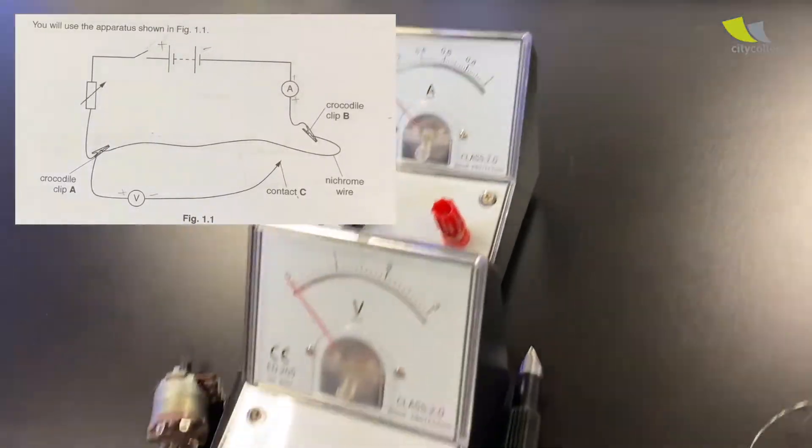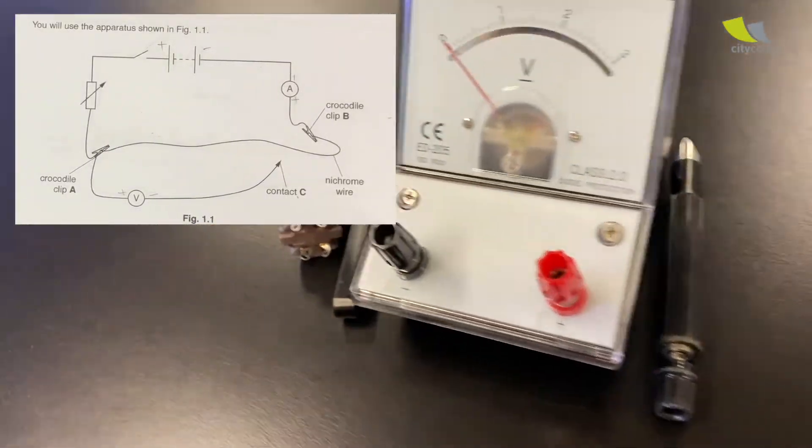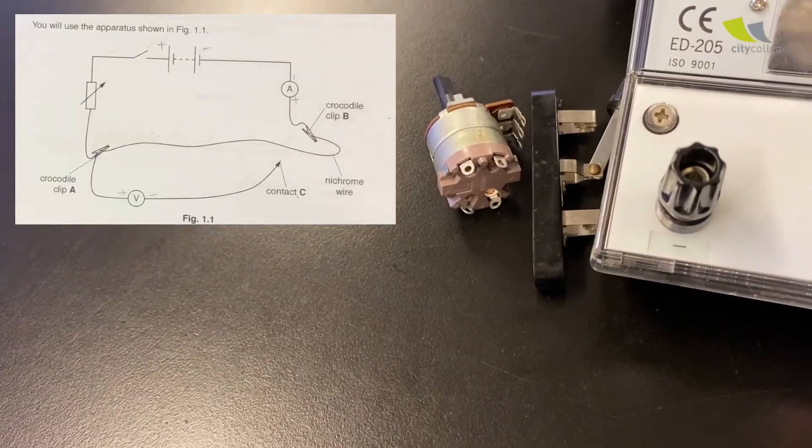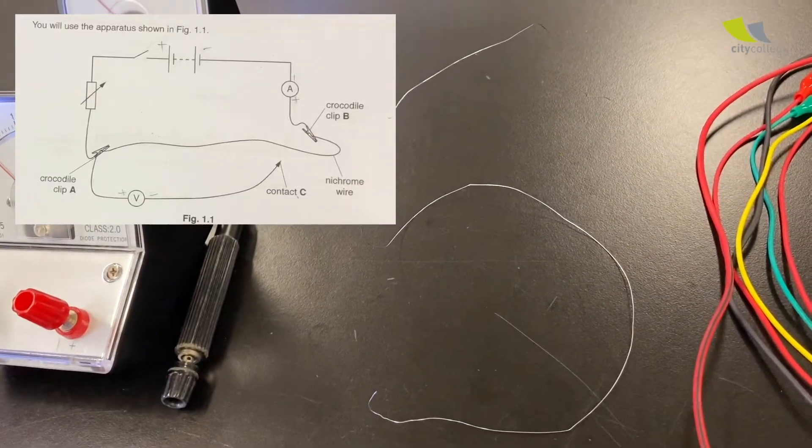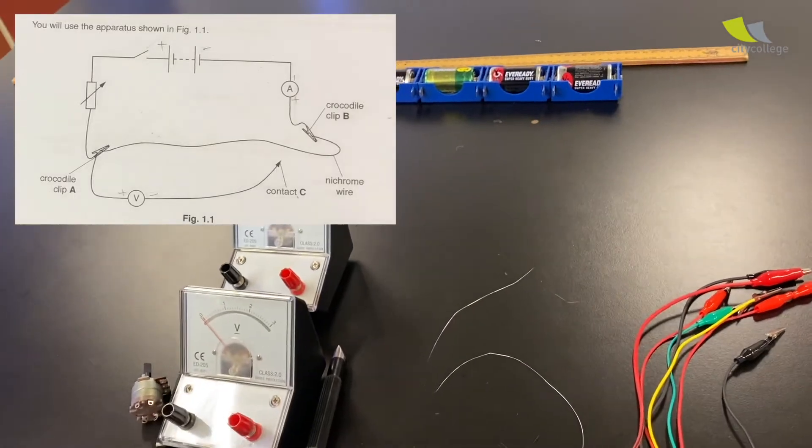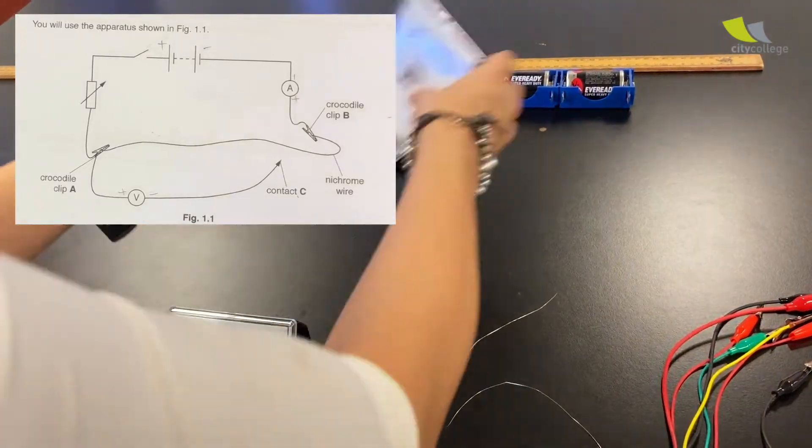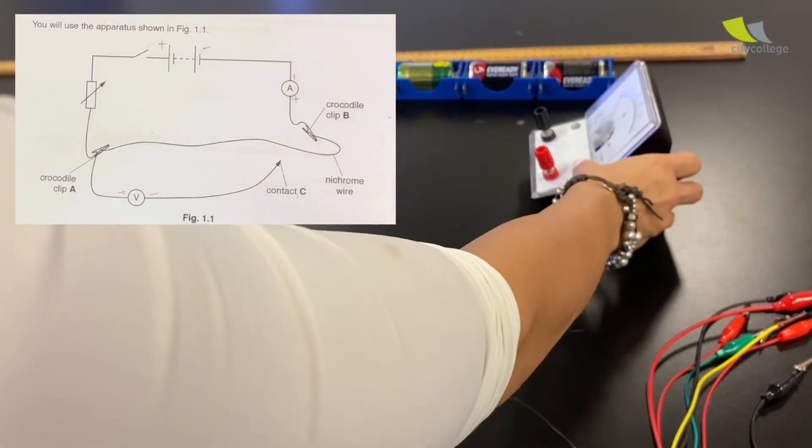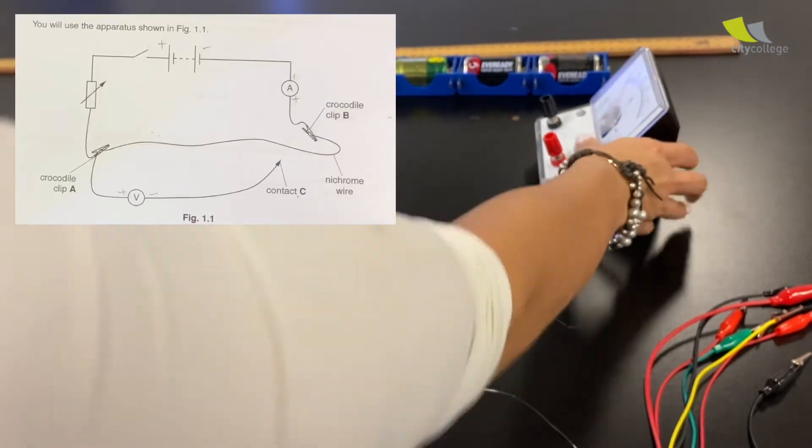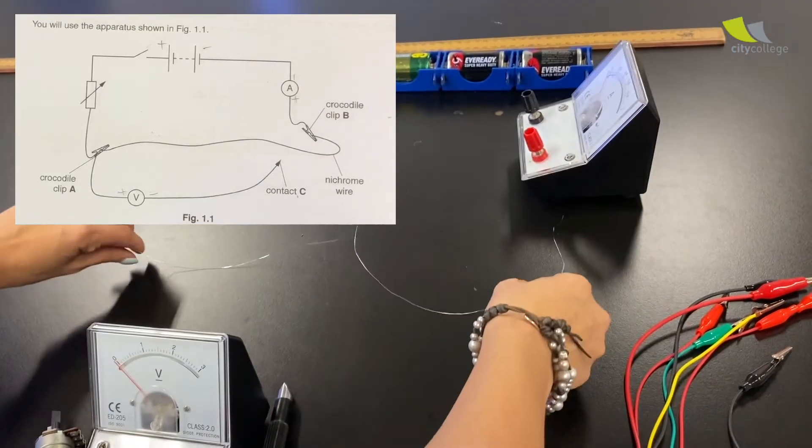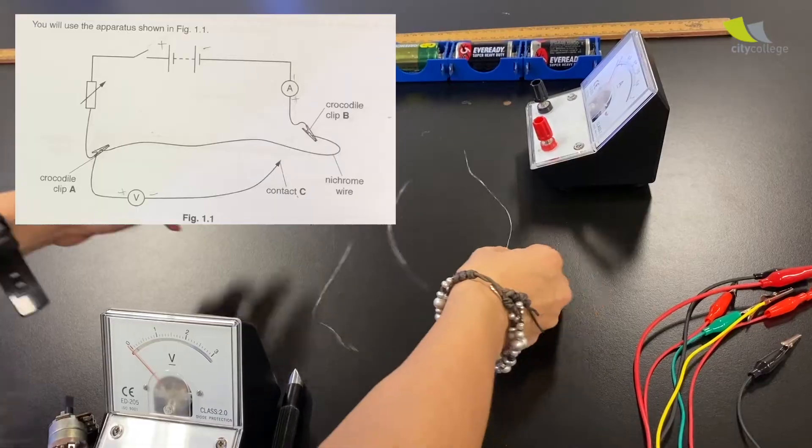And we have ammeter, voltmeter, jockey, variable resistor, and the switch. Okay. And the nichrome wire. So the first thing you do is that you place all the components of the circuit at the right place first. So place the ammeter after the battery. Then go down. You have the nichrome wire.